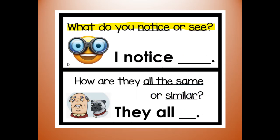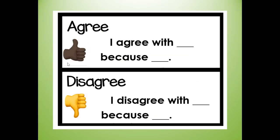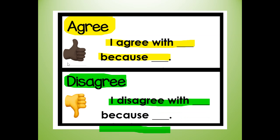For every group of pictures, I'm going to ask: what did you notice or see? And you're going to say something like, I notice. I'm also going to ask: how are they all the same or similar? And you're going to answer by saying, they all. If you have a partner, you can say whether you agree — I agree with you because — or if you disagree, you can say, I disagree with you because.